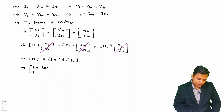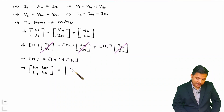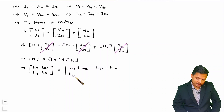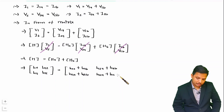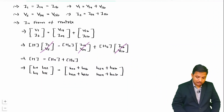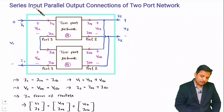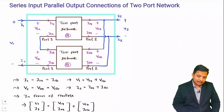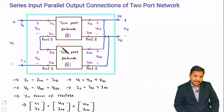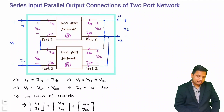So the equivalent H parameter matrix has elements: H11 equals H11A plus H11B, H12 equals H12A plus H12B, H21 equals H21A plus H21B, and H22 equals H22A plus H22B. When the connection is series at input and parallel at output, the equivalent two-port H matrix is the algebraic sum of the individual H matrices.